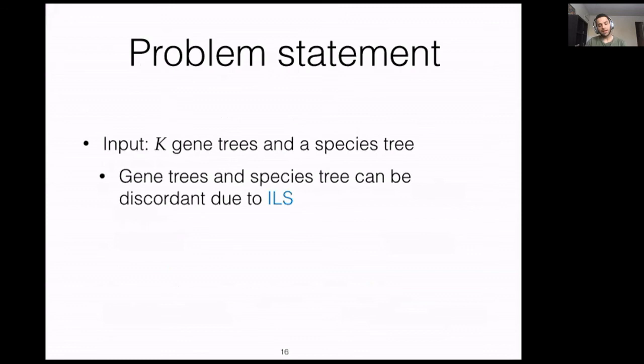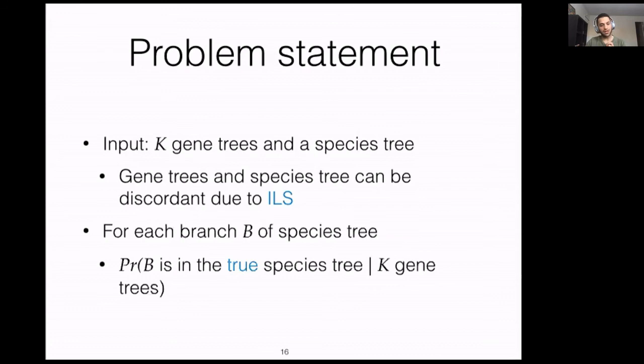So the problem I have is: I have k gene trees and one species tree. Gene trees and species trees can be discordant due to ILS only — I'm assuming no gene tree error. For each branch B of the species tree, what is the probability that B is in the true species tree given the gene trees that I have?